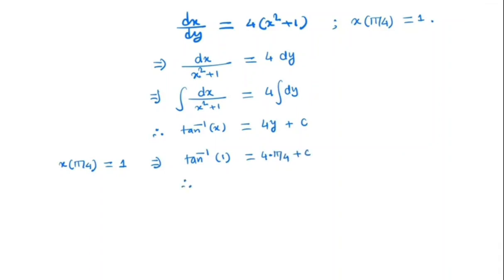Now tan inverse 1 is nothing but pi by 4, and 4 times pi by 4 is pi plus c. So c is nothing but minus 3 pi by 4. So the required solution will be tan inverse x is equal to 4y minus 3 pi by 4.